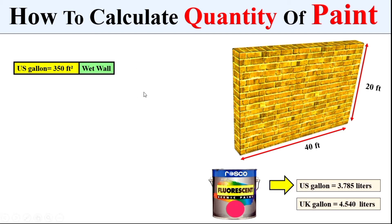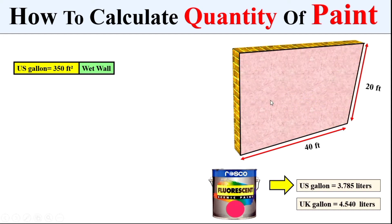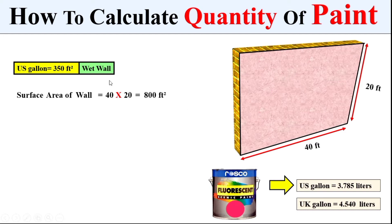If we want to calculate the total quantity of paint for this wet wall, first we calculate the total surface area. We multiply the total length of the wall by the total height of the wall to get the total surface area. As we know, one US gallon can cover 350 square feet of area.